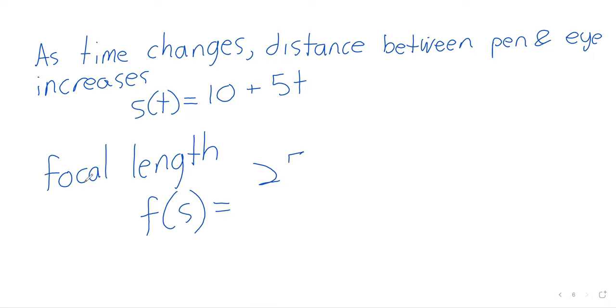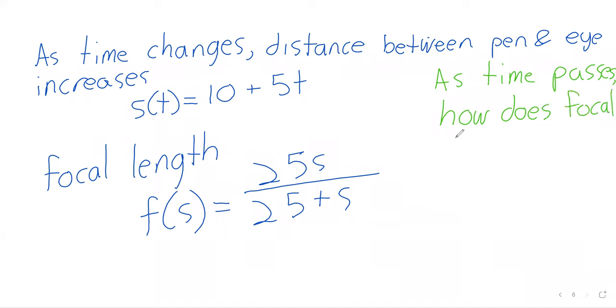So the focal length depends on the distance and in particular the relationship between the focal length and the distance is given by this little quotient. The whole quotient 25s divided by 25 plus s. And now let's say we ask the question, then, as time passes, how does the focal length of my eye change?